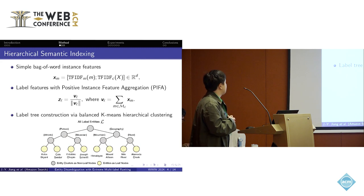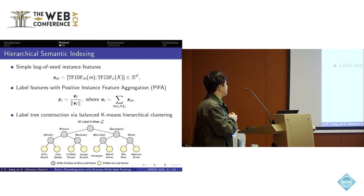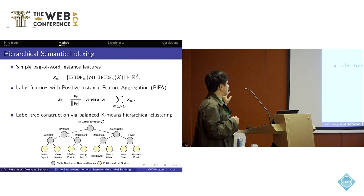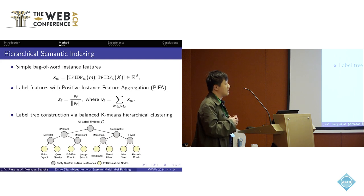For the hierarchical clustering and the hierarchical label tree, we use a simple bag-of-words instance features of both the mention and the context, so we have the instance features of those in the training set. Based on those training features, we can construct the label features based on positive instance feature aggregation, which we call PFA. We leverage the normalization over the summation of the instance features of the corresponding label. Based on those label features, we can use a balanced k-means hierarchical clustering to construct the label tree, so we can have a semantically representable label hierarchy of those entities.